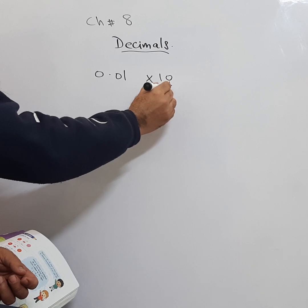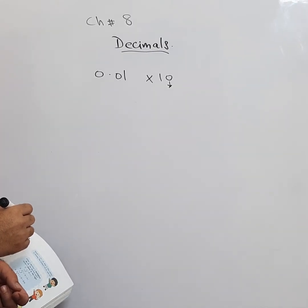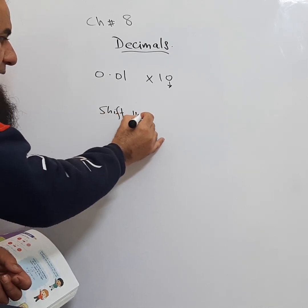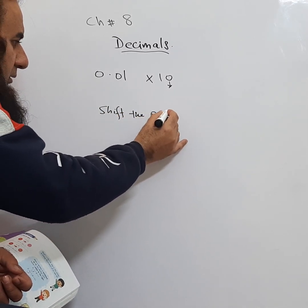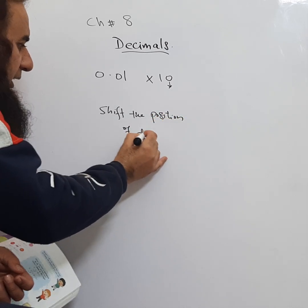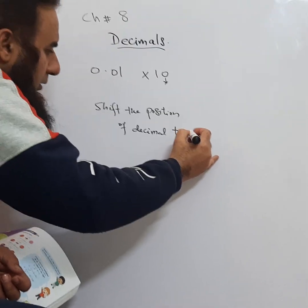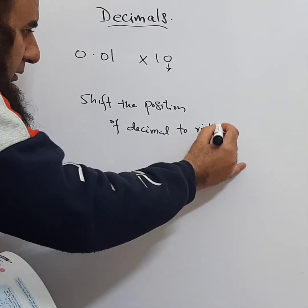So remember, when you multiply with 10, which has one zero, we need to shift the position of decimal to the right side.